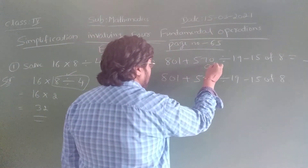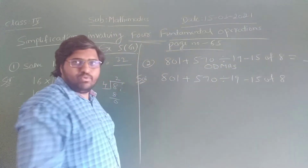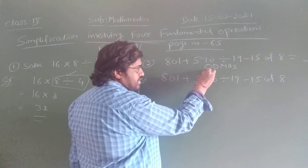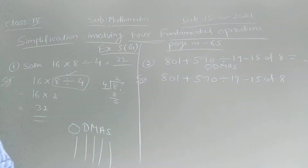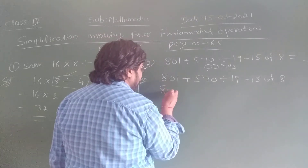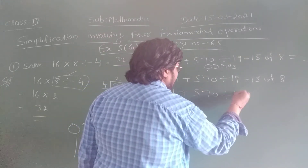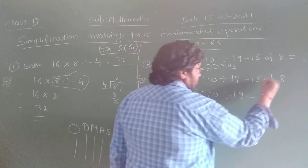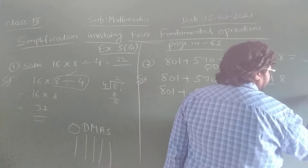Our rule is O, D, M, A, S. Here O is there — O means off. Off means multiplication. So first I am going to multiply. 801 I am going to keep as it is. 570 divided by 19, keep as it is. Off means 50 of 8, that is 50 into 8. So, 50 into 8: 50 times 8 equals 400. I wrote 400.